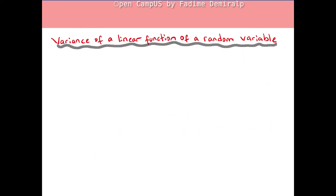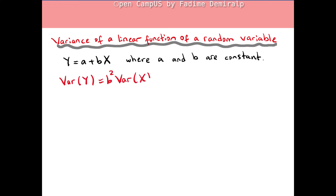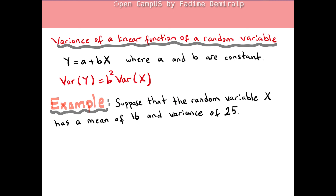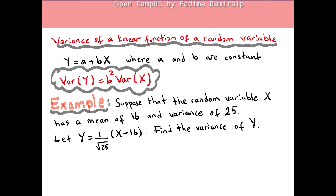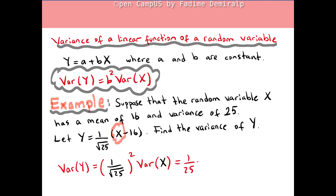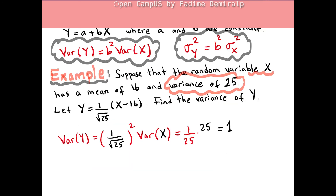Suppose that a random variable y is defined as a function of another random variable x, such that y equals a plus bx, where a and b are constants. Then the variance of y is given by b squared times the variance of x. For example, suppose x has a mean of 16 and variance of 25. Let y be 1 over radical 25 times x minus 16. By using the property, variance of y equals the square of the constant times the variance of x: 1 over 25 times 25, so the variance of y equals 1.